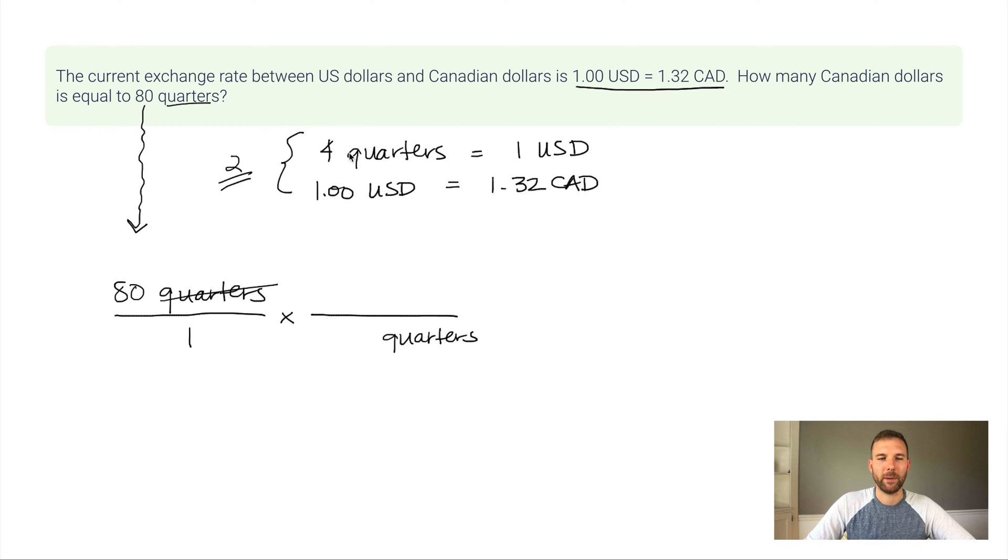So now I go and look at my conversion factors. Where's quarters? Oh, it's here. So I'm going to put four because that's the number, the factor that goes with the label. Four quarters equaling one US dollar. I like to cross off the conversion factors as I use them because it kind of narrows down what I have left to work on. And then I also cross off the units that have canceled out. If I was to stop doing math now, I would have how many dollars is equal to 80 quarters? US dollars. But I want to know Canadian dollars.